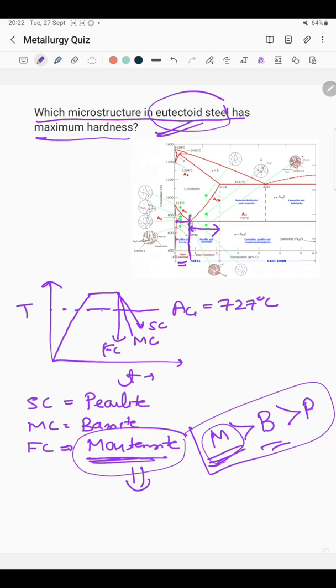Another reason is because this carbon doesn't get enough time to diffuse, it traps into the BCC lattice and there will be lattice distortion. It means BCC structure changes into BCT structure. Due to this lattice distortion, the dislocation movement is very difficult.